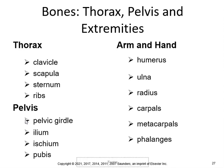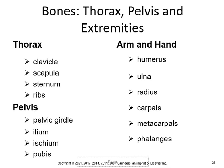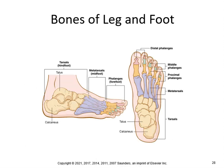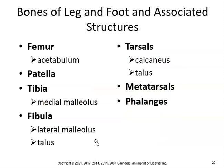In the thoracic region you have the clavicle, scapula, sternum, and ribs. The pelvic girdle includes the ilium, ischium, and pubis. The arm bones are the humerus, ulna, radius, carpals, metacarpals, and phalanges. The leg and foot include the femur, acetabulum, patella (kneecap), tibia (shin), the medial and lateral malleoli, fibula, talus, tarsals, calcaneus, metatarsals, and phalanges.